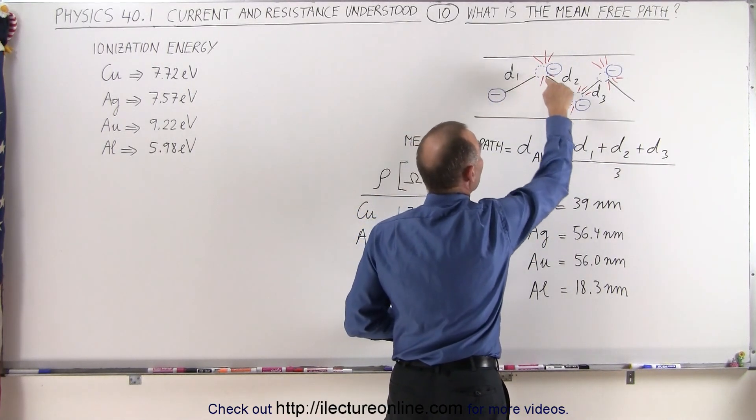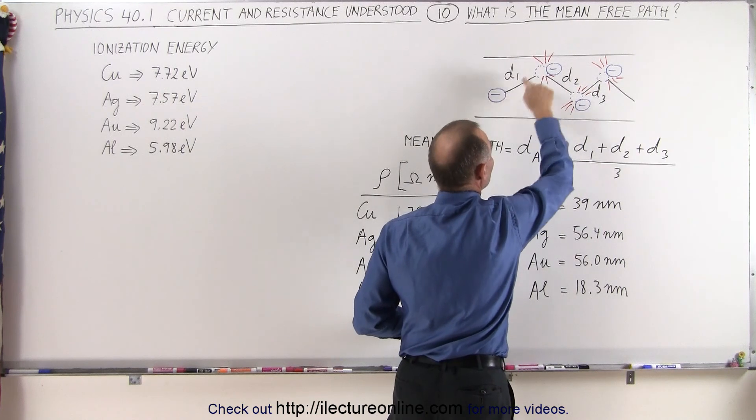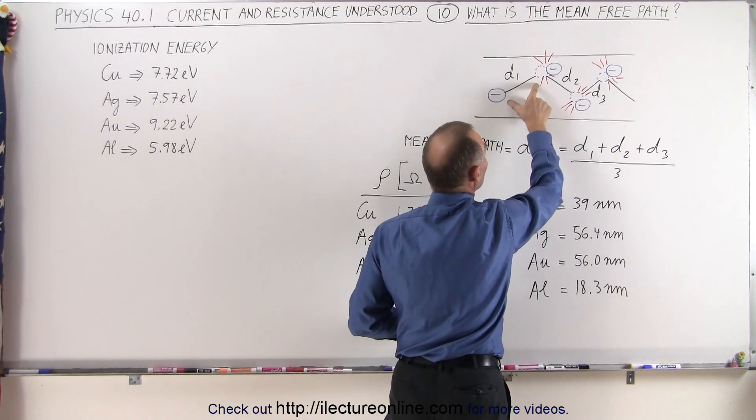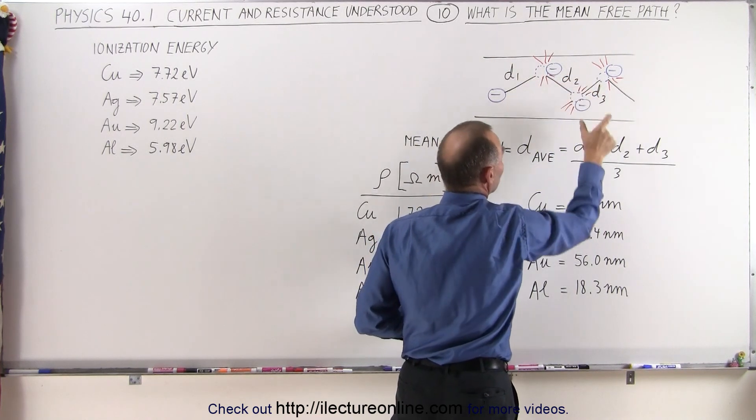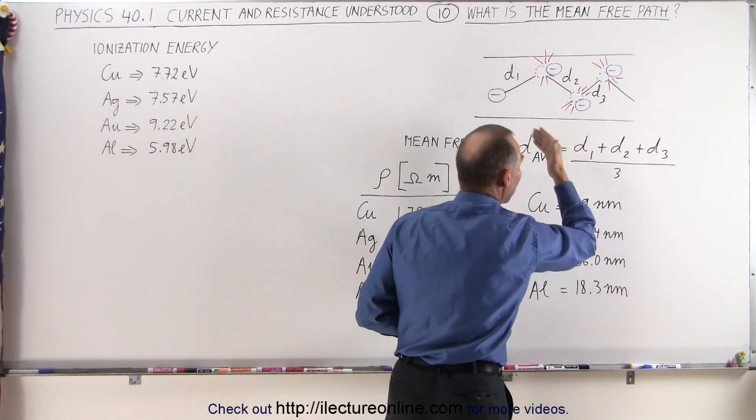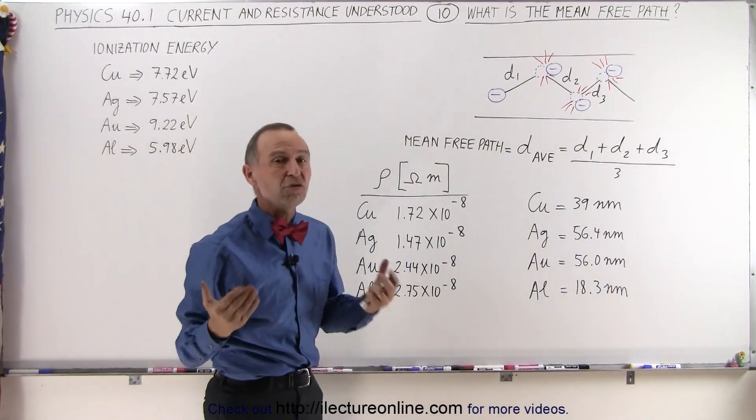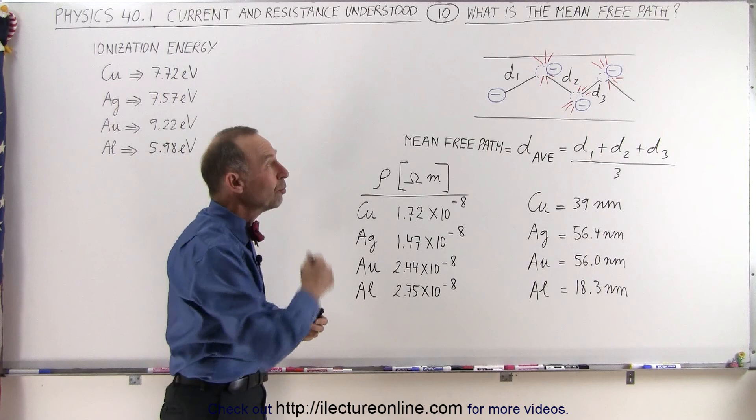Here we have, for example, three paths taken by this electron before it collides. We take the distance one, distance two, distance three, add them together, divide by three, and that would be the average distance traveled between collisions or the mean-free path.